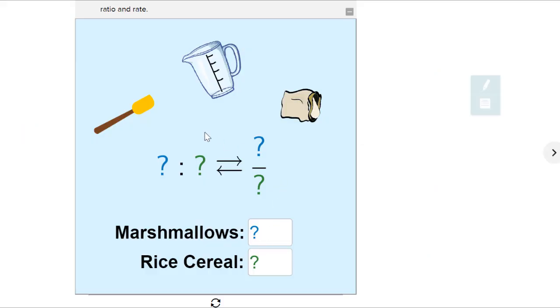Here in this CK12 simulation, we're going to practice writing ratios as rates when the units are the same. So let's say that we need four cups of marshmallows and six cups of rice cereal. So that ratio of four to six gives us a rate of four over six.